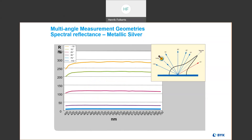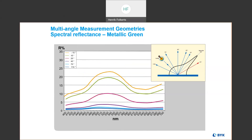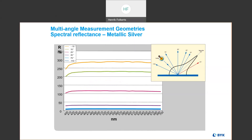Next we have an example of metallic silver. We see pretty much the same thing as the metallic green — the shape of the spectral curves at each angle is similar, a very flat curve indicating a neutral color. But because it's a silver with lots of metallic pigment, it's going to be very highly reflective and undergo lots of light-dark flop from angle to angle — a huge amount of flop compared to our metallic green.